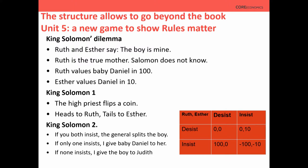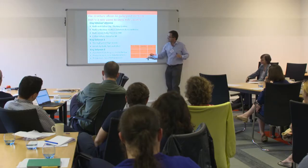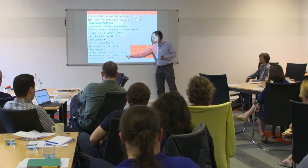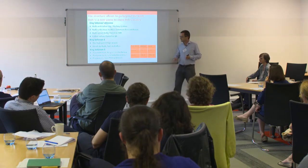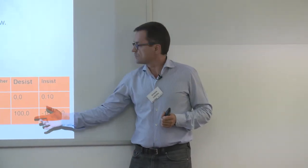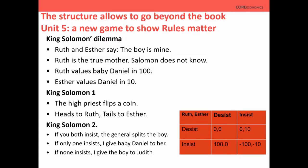If only one insists, I'll give baby Daniel to the only woman who insists. If no one insists, I'll give the boy to a third person. Once you have these rules you write a payoff matrix — a two-by-two game, easy to analyze. Students can find the equilibria: there are two main equilibria and some clever students who've done further reading find an additional one. You ask them: is this man very wise? He's essentially almost replicating the coin-flip outcome and not getting anything extra. How can he be claimed so wise?